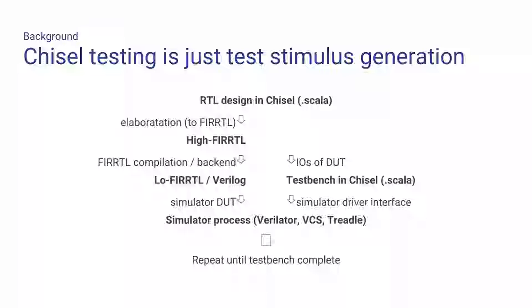From a software background: from your module description, you have two things coming out. One is the simulator — you compile everything down to Verilog or low FIRRTL and start up a simulator. From your test bench, you take the IOs from your module and compile that down into something that runs in lockstep with the simulator. Think of your simulator as running one step per clock cycle. Your test bench runs in lockstep — it does your peeks and pokes, writes into the simulator, waits for a clock, and then does the next cycle of peeks and pokes.